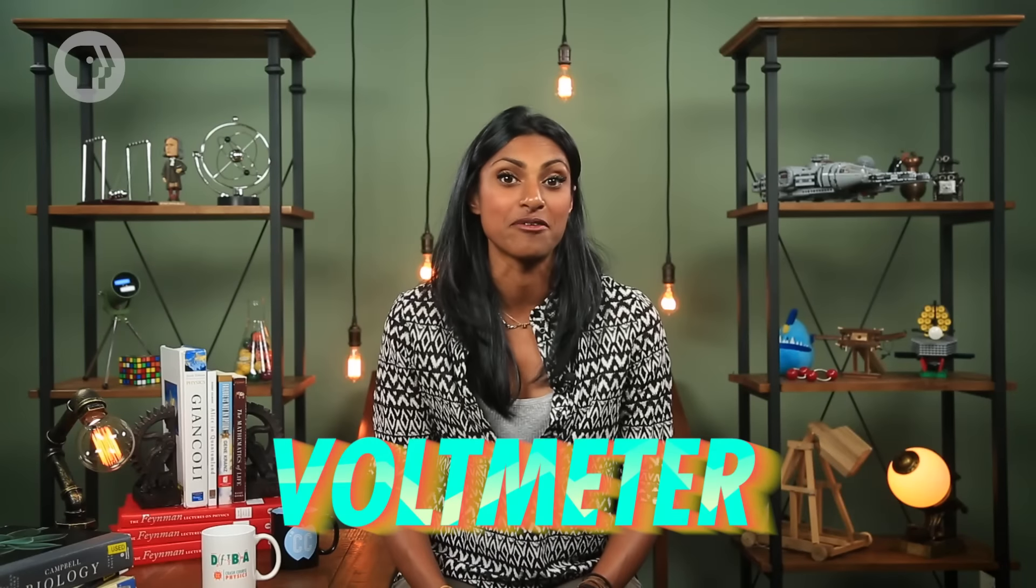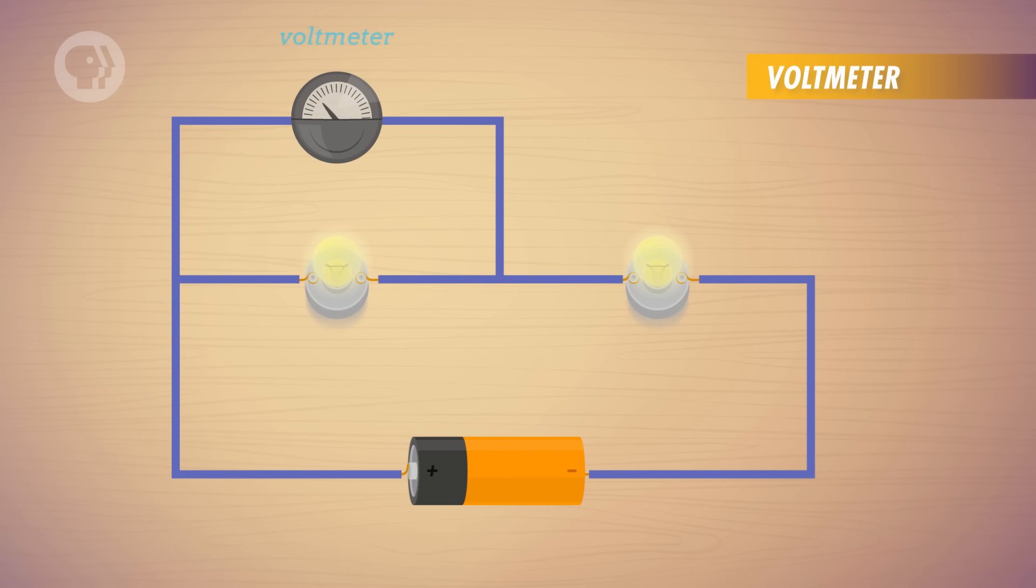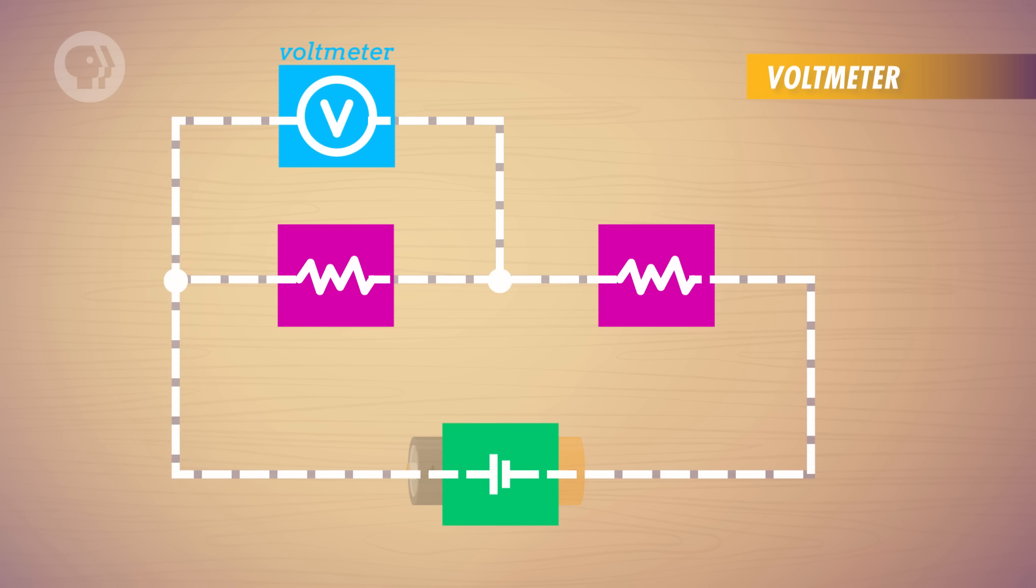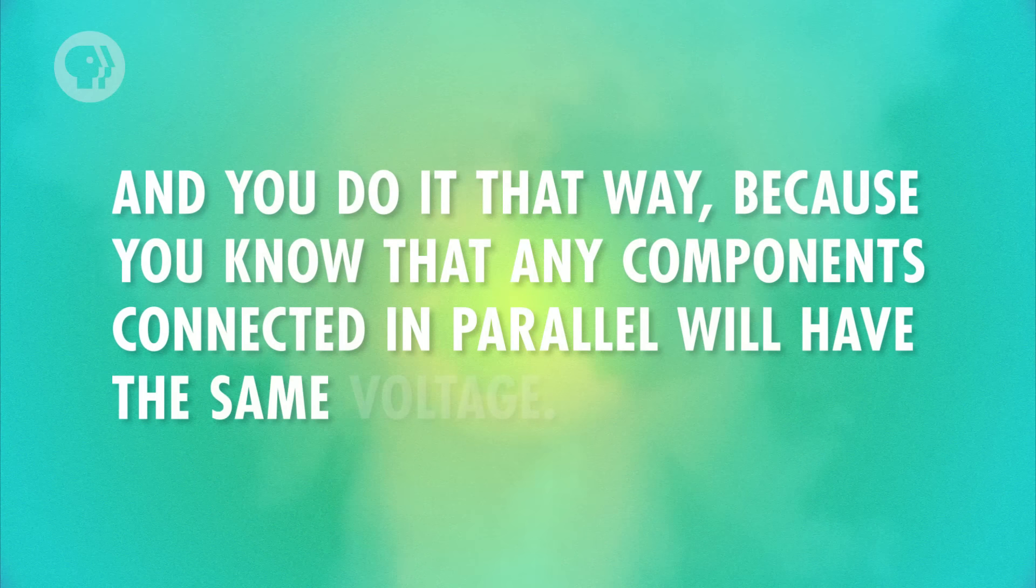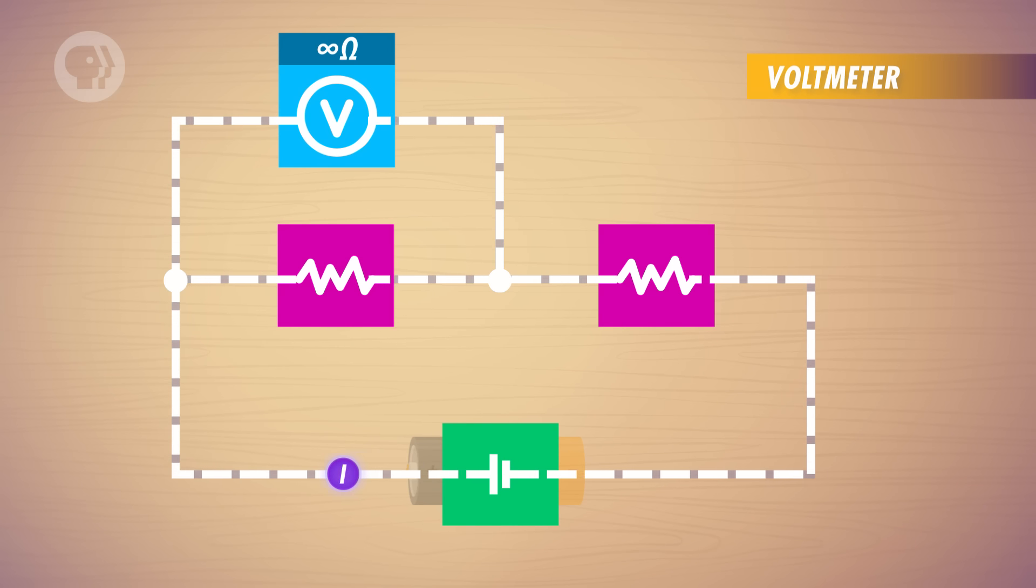But even though we all love math, what if that's not enough for you? What if you physically constructed this circuit yourself, and you wanted to measure the values so that you knew your math checked out? To measure voltage, you just need a tool known as a voltmeter. Pretty creative, I know. Now, you want a way to measure voltage without altering the actual circuit. No solution is perfect, but you can get a pretty accurate reading by attaching the voltmeter on either side of the device that you want to measure. And you do it that way because you know that any components connected in parallel will have the same voltage. But even if you measure the voltage, you still want to avoid changing the resulting circuit. So what you do is give the voltmeter a resistance that's so high it's considered infinite relative to the rest of the circuit. With an infinite resistance, the same voltage is read across both the voltmeter and the device you're measuring, and a tiny amount of current ends up running through the voltmeter.